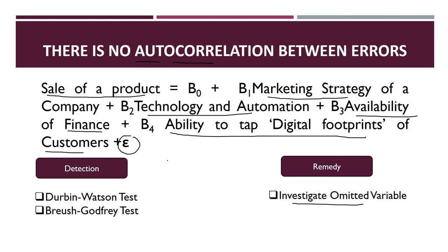There are various other assumptions as well — for example, endogeneity, and the assumption that residuals should have a zero mean. We will discuss more assumptions in future videos. That's all for the regression equation and assumptions — hope you have understood the concept. Thank you.